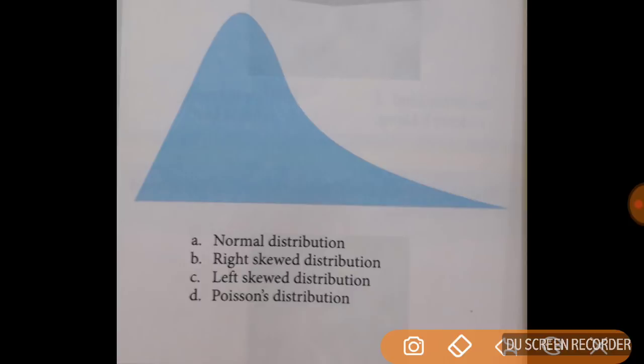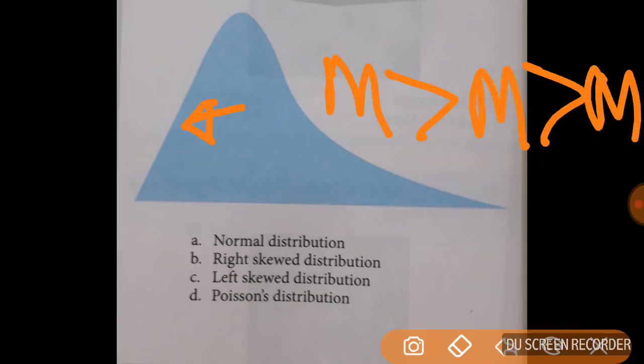Now in this curve tell me the distribution. Whether it is left skewed, whether it is normal distribution, or whether it is right skewed. So you can observe that it is positively skewed. That is it is right skewed. So what will happen here is mean will be greater than median will be greater than mode. So right skewed curve means mean greater than median greater than mode.